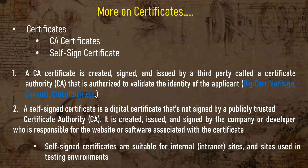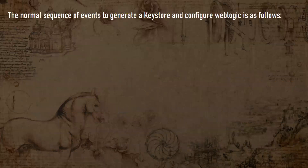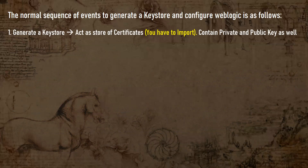Self-signed certificates are suitable for internal use and testing environments. The normal sequence of events to generate a keystore and configure WebLogic is as follows. First, you create or generate a keystore. The keystore is a repository for your private key and your certificates — everything you receive from a CA or generate as a self-signed certificate needs to be imported into your keystore. It also contains your private key, which is issued by the certificate authorities.